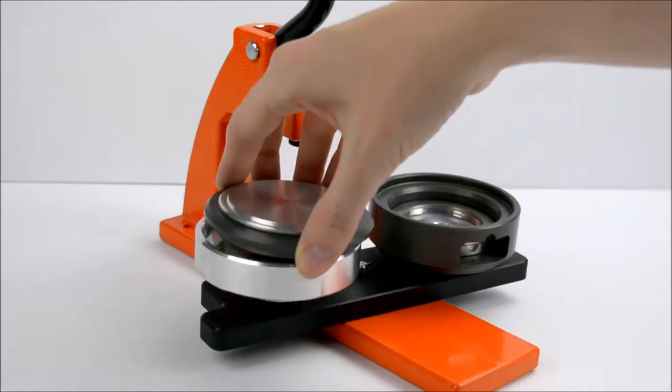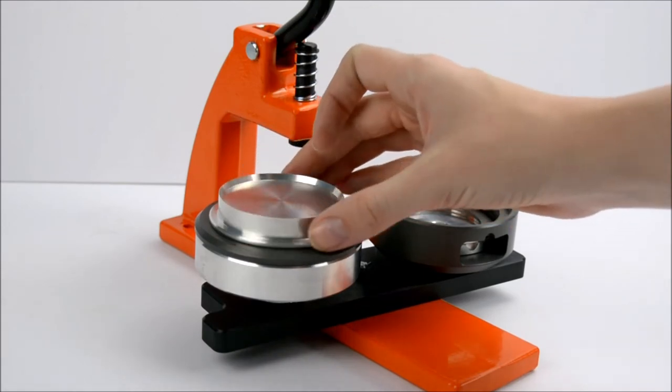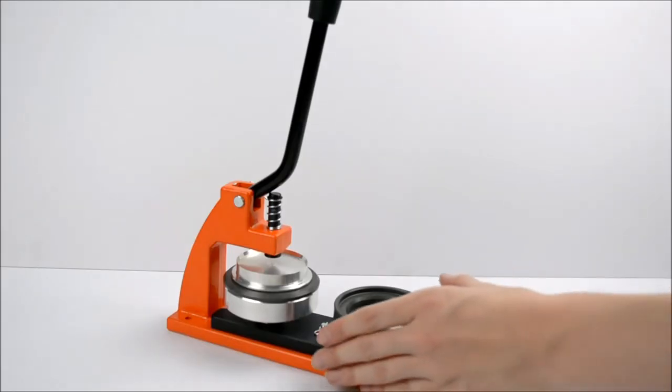Move the grey ring onto the first die and turn the centre punch so it looks like a top hat. Rotate the dies so the first die is directly under the handle and pull firmly down.